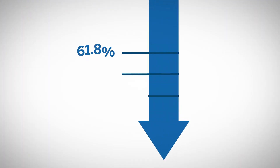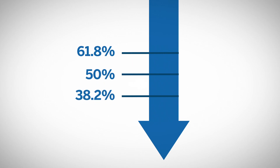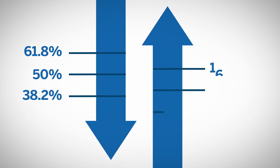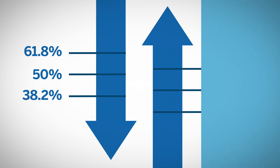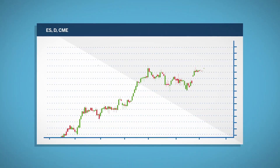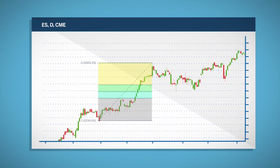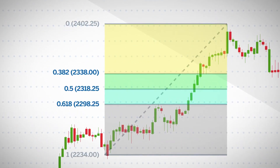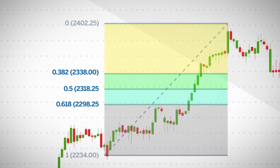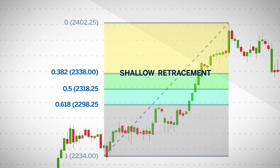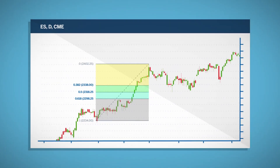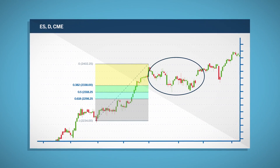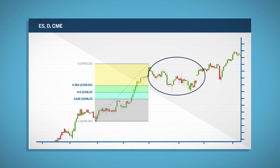There are three retracement levels that are important for traders: 61.8%, 50%, and 38.2%, and three extension levels at 161%, 150%, and 138%. For retracements, a trader will use a Fibonacci tool to look for the three zones: 38.2%, 50%, and 61.8%. 38.2% is considered a shallow retracement, where a retracement to 61.8% is considered a deeper retracement. These three zones serve as alerts for the trader to watch for possible areas of price retracing back to the trend.